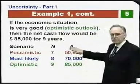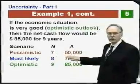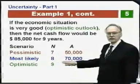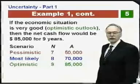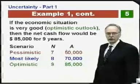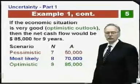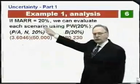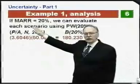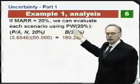Here's a review of the numbers. The pessimistic scenario has a lifetime of seven years with inflows of $50,000 per year. Most likely is eight years with $70,000 per year. And the optimistic outlook is nine years with an inflow of $85,000 per year. We can use a minimum attractive rate of return of 20% and compute the present worth for each of these scenarios.